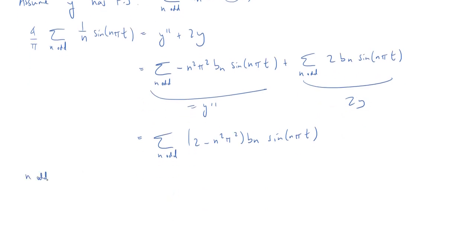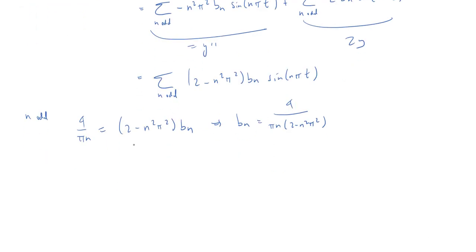So, when n is odd, we get the coefficient on the left is 4 over πn. And on the right side, the coefficient is 2 minus n squared π squared times b_n. And therefore, b sub n is 4 over π times n times 2 minus n squared π squared. And there we go. We found our b_n. It's just that simple.